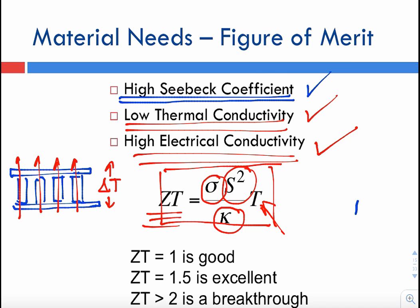To give you an idea, if you have a ZT of 1, it is a fairly good number. Most commercial thermoelectric devices have ZT on the order of 0.7 to 0.8. A ZT of 1.5 is excellent, and something greater than 2 is a breakthrough. There are scientists who devote their lives to increasing this ZT figure of merit. This is an ongoing materials research, with many scientists around the world trying to improve the ZT figure of merit.